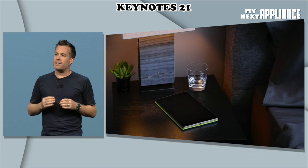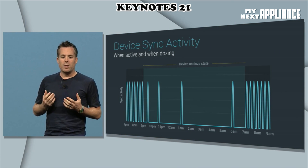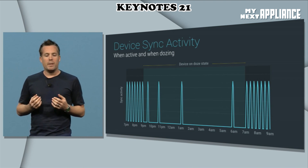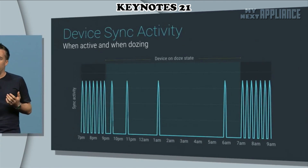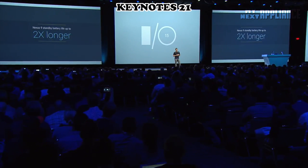Android uses significant motion detection to learn if a device has been left unattended for an extended period of time. I'm happy to say that we're seeing devices with M lasting up to two times longer in standby.